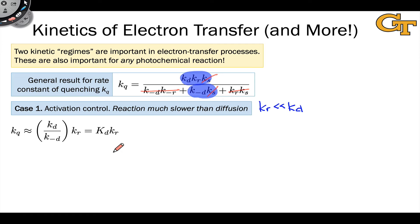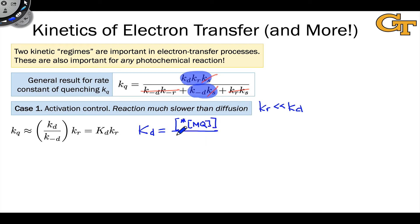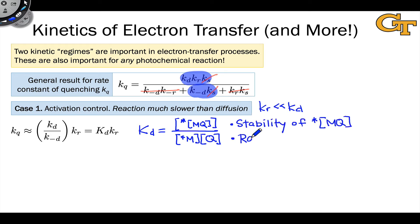The equilibrium constant for diffusional encounter also matters, and this depends on the stability of the exaplex relative to the separated M* and Q. This equilibrium constant is the molarity of the exaplex as the product of diffusional encounter divided by the molarities of the separated M* and Q at equilibrium. In this regime, the quenching rate is controlled by both the stability of the exaplex and the rate of reaction, since many diffusional encounters do not lead to reaction.